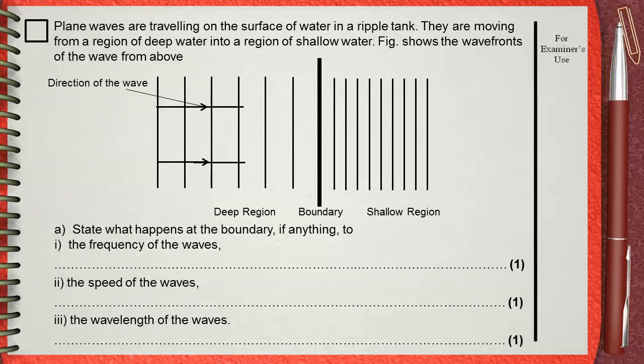Plane waves are traveling on the surface of water in a ripple tank. They are moving from a region of deep water into a region of shallow water. Figure shows the wavefronts of the wave from above.